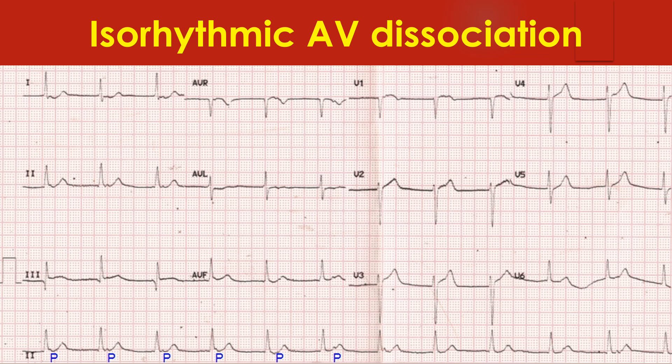In isoarrhythmic AV dissociation, inspiratory increase in sinus rate results in sinus rhythm dominating over AV dissociation. In sinus rhythm there is AV synchrony and hence higher pulse volume compared to AV dyssynchrony in expiration. The ECG shows the typical fluctuation in PQRS relationship with nearly identical atrial and ventricular rates.